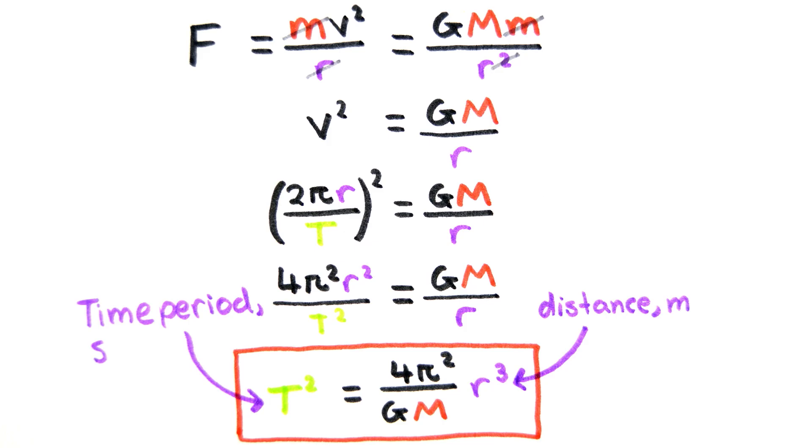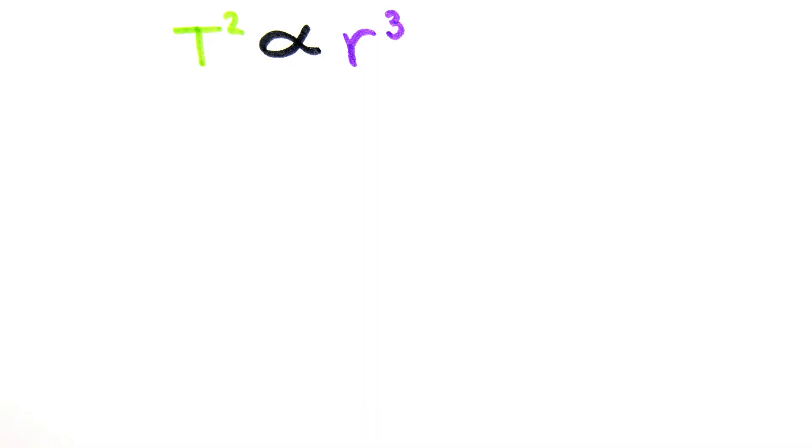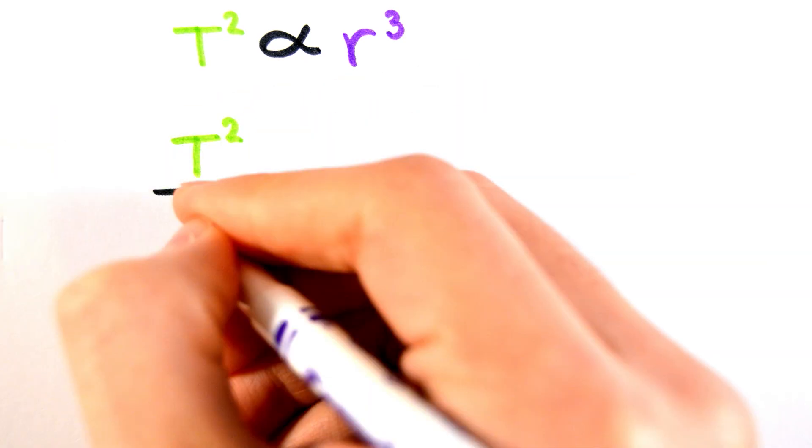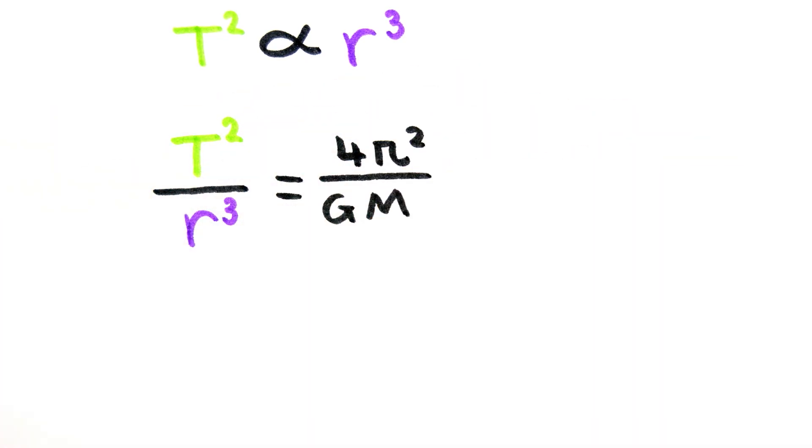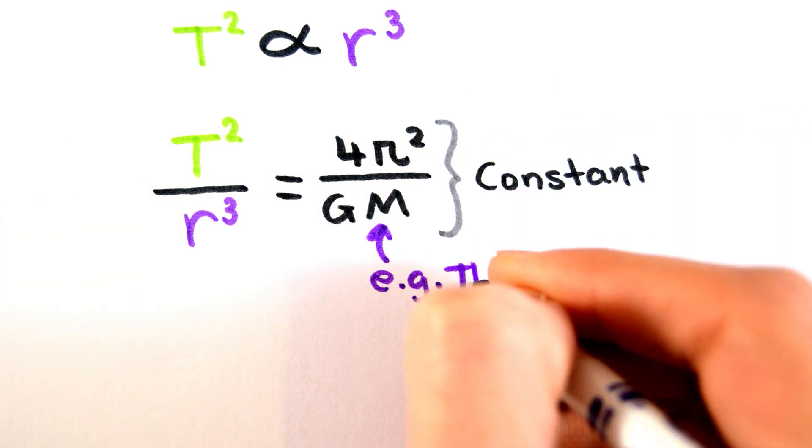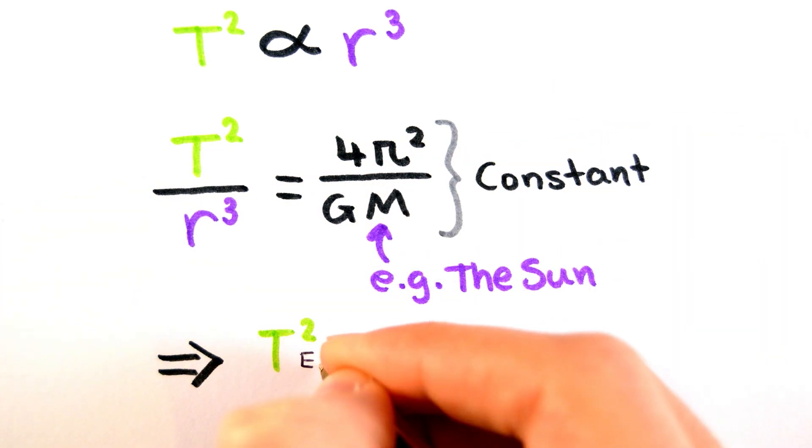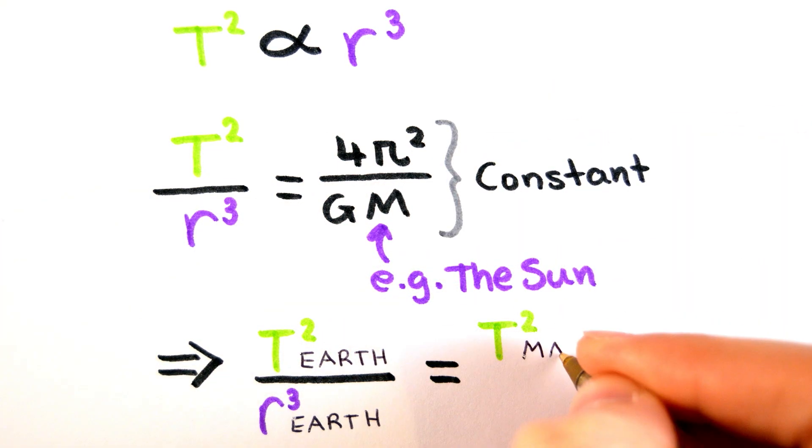This equation shows Kepler's third law, which states that T squared is directly proportional to r cubed. This also suggests that for a set of celestial bodies, e.g. the planets of our solar system, orbiting the same large body, e.g. the sun, T squared over r cubed is a constant and is equal for all the celestial bodies.